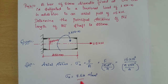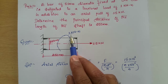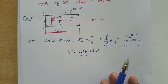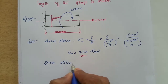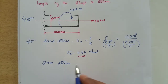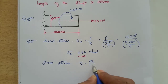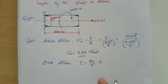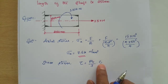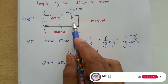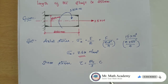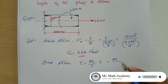This 7.64 N/mm² is tensile in nature since we are getting a positive value. Now we find the shear stress due to the twisting moment. The shear stress tau is given by the torsion equation: tau = Mt / J × c, where Mt is the twisting moment, J is the polar moment of inertia, and c is the distance from the neutral axis to the extreme fiber.